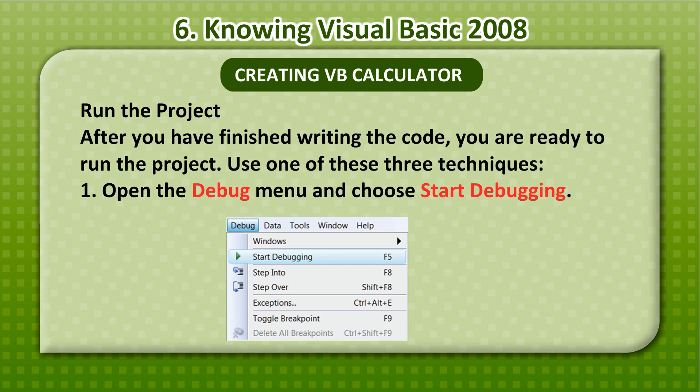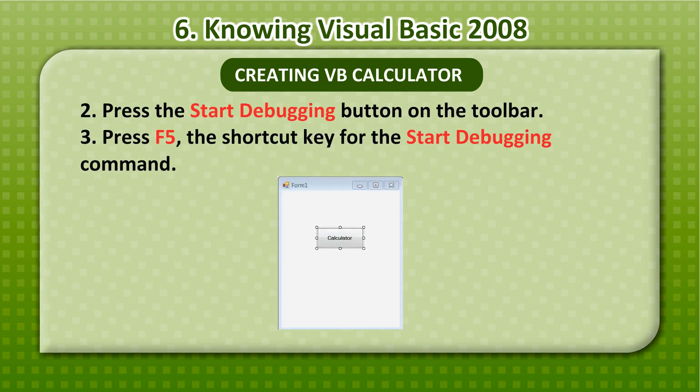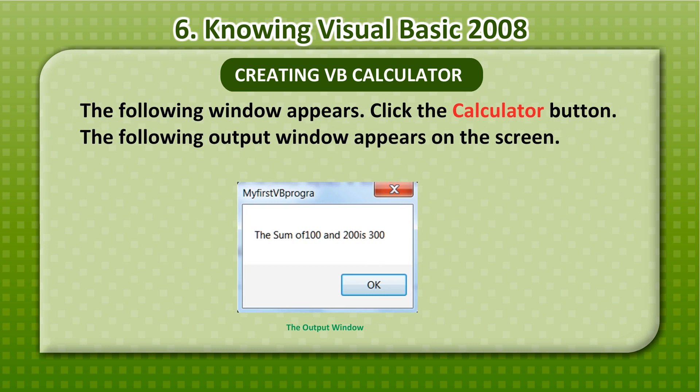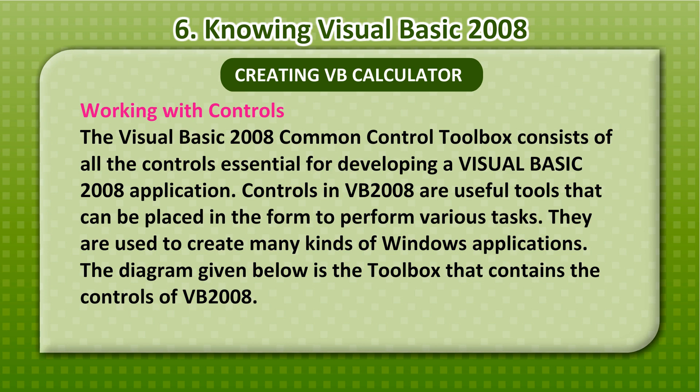You are ready to run the project using one of these three techniques: 1) Open the Debug menu and choose Start Debugging; 2) Press the Start Debugging button on the toolbar; or 3) Press F5, the shortcut key for the Start Debugging command. The window appears — click the Calculator button and the output window appears on the screen.